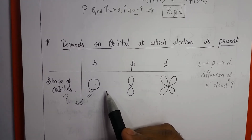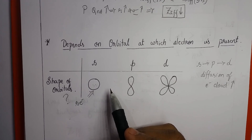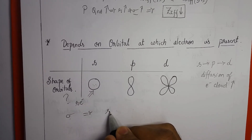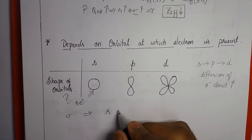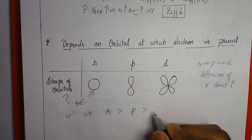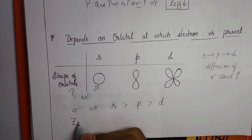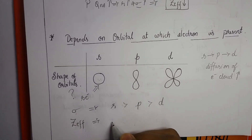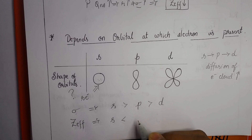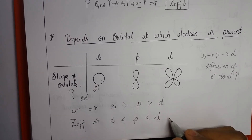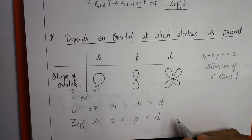Because s orbital electrons are more concentrated, they are more capable of shielding than p, which shields more than d. Therefore, the sigma value for s orbital electrons is greater than for p, and greater than for d. Consequently, the Z_effective is least for s electrons and greatest for d electrons, since d orbital electrons are most diffuse and least effective at screening.